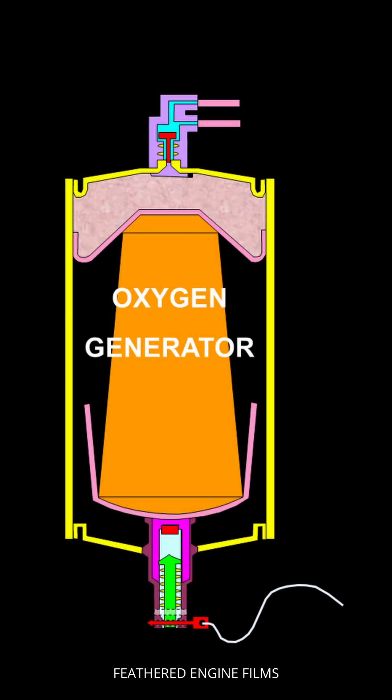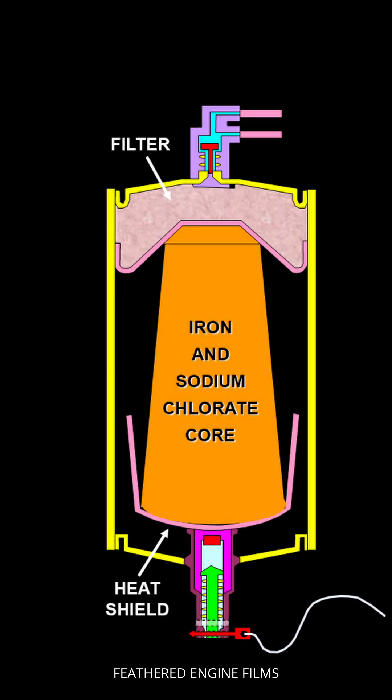The chemical oxygen generators are an incredibly clever device that chemically changes sodium chlorate and iron into salt, iron oxide, and the thing we're really after — gaseous oxygen.